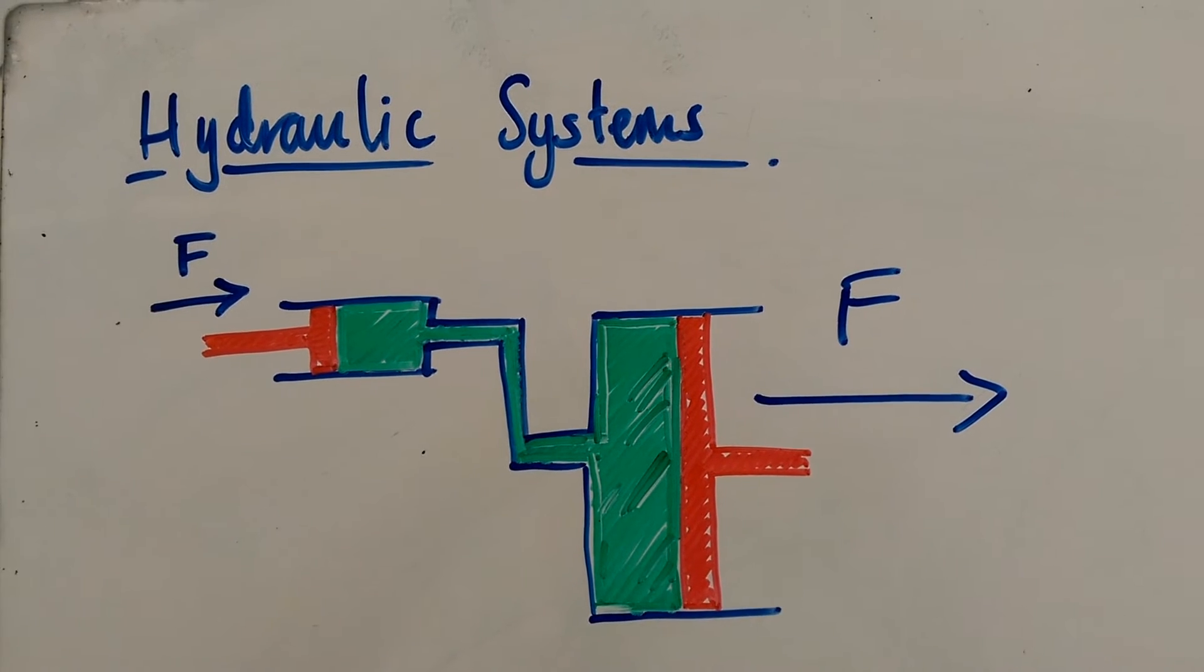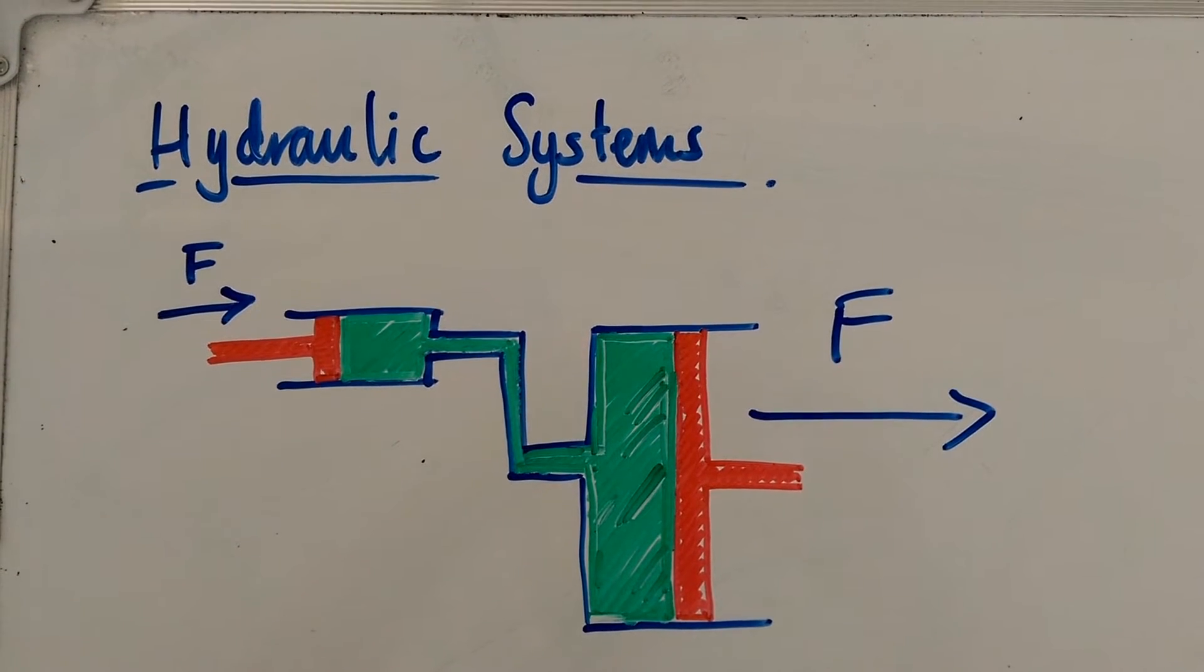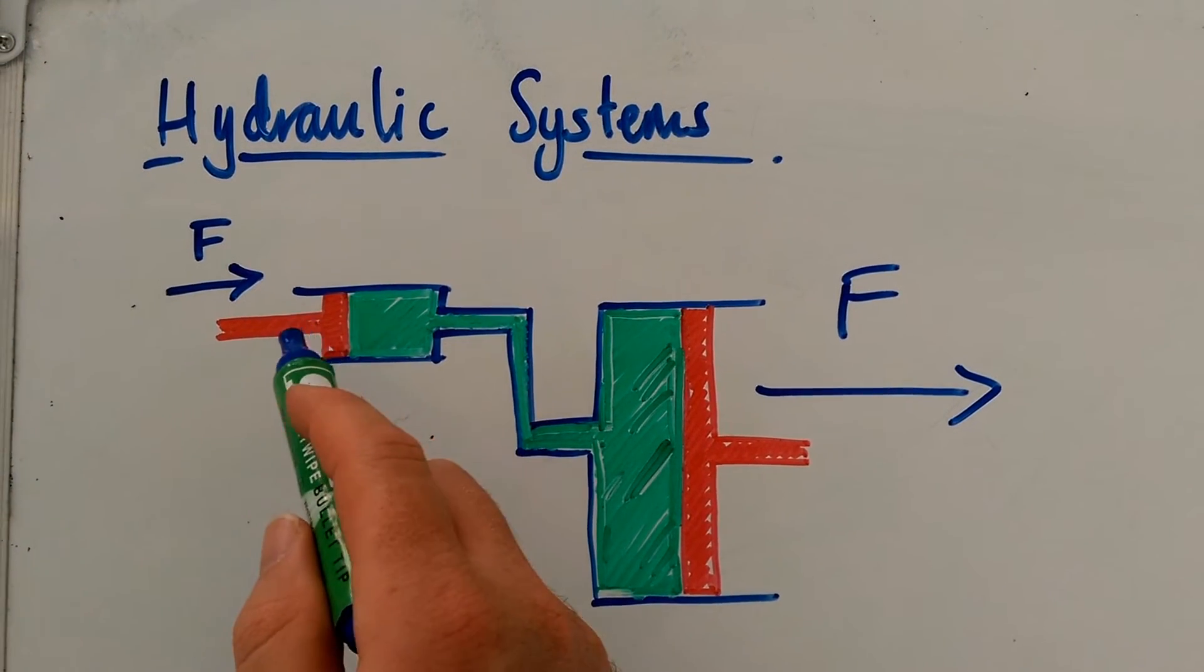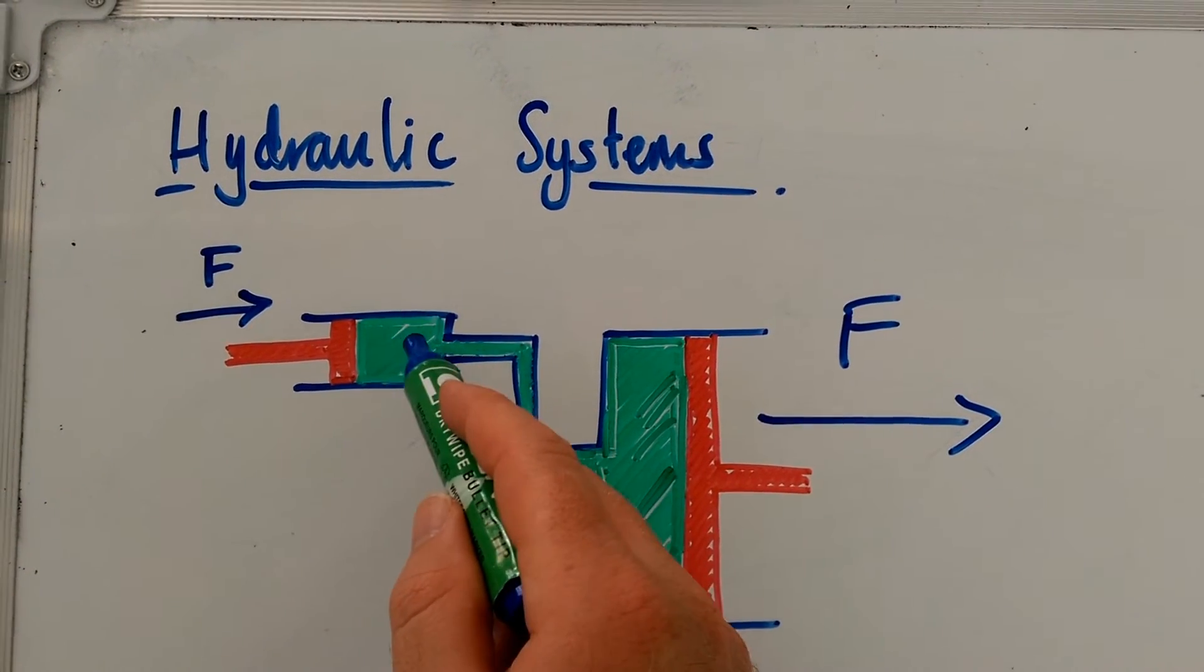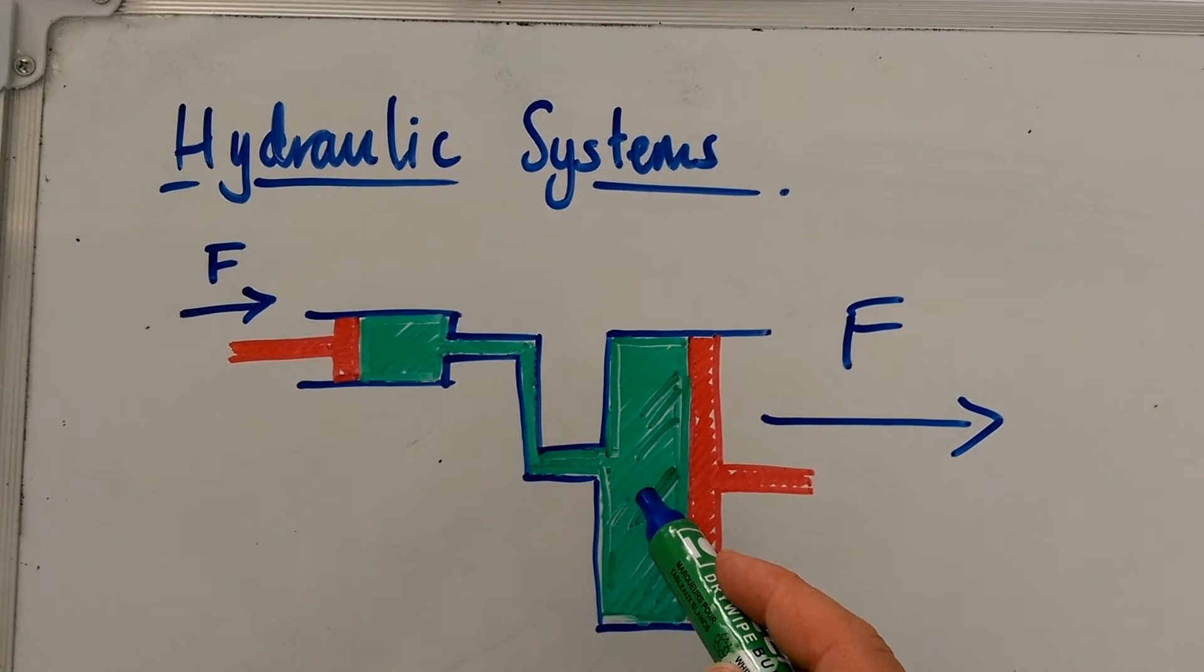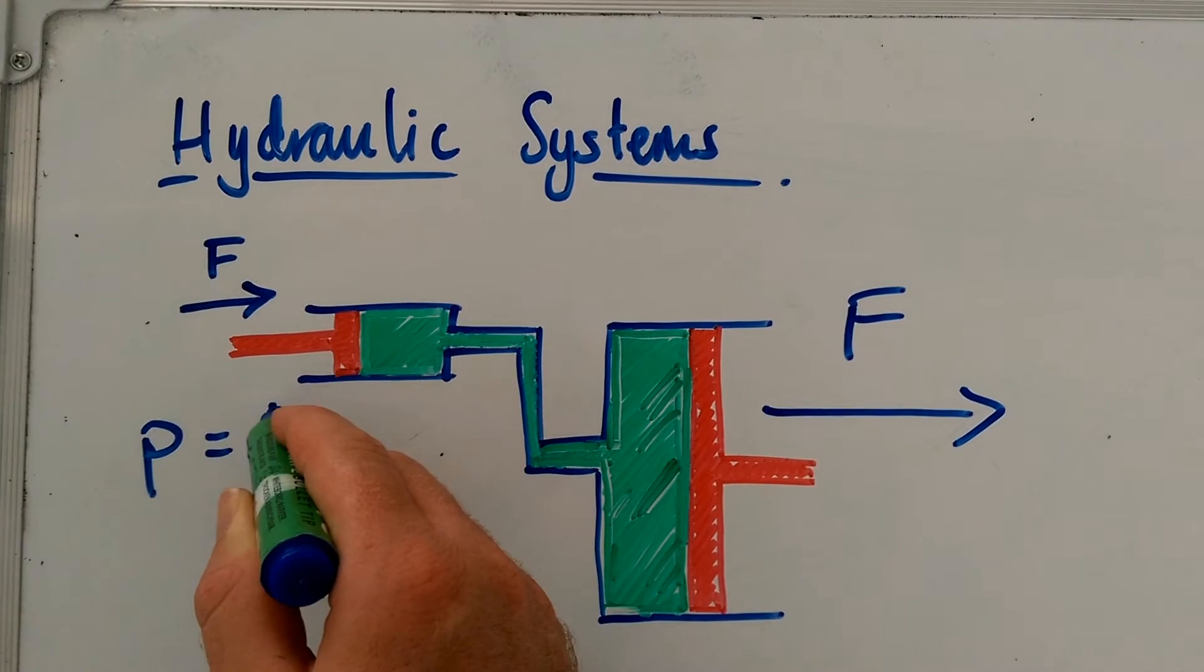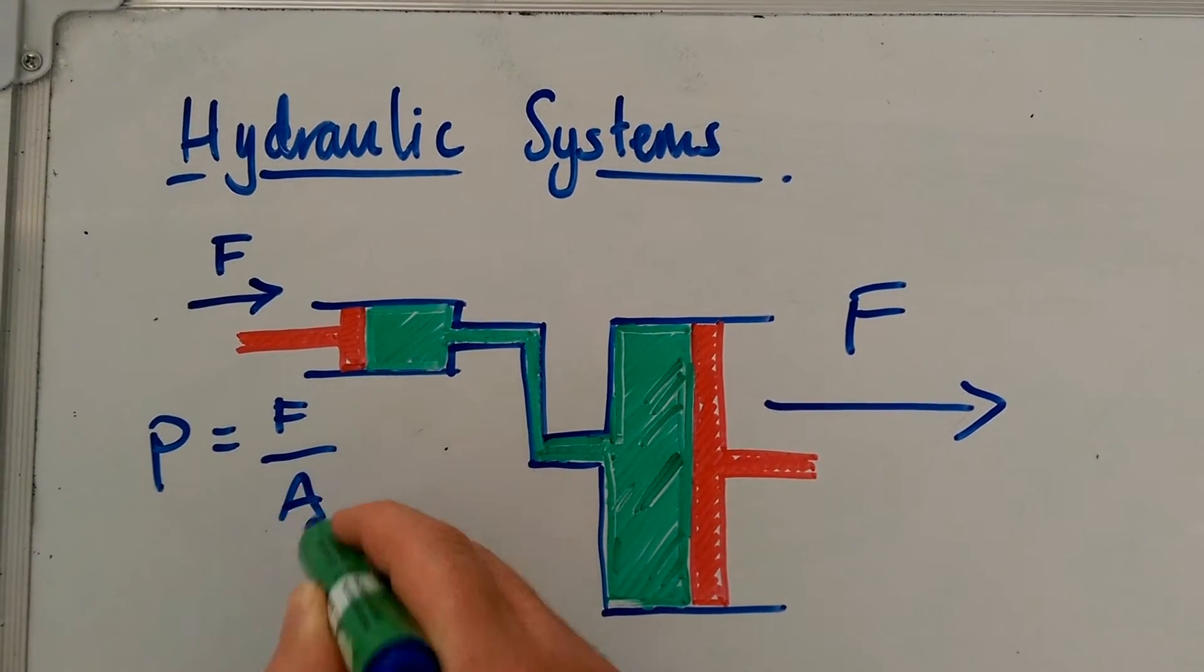We can work by using a principle to do with liquids, which is that liquids are virtually incompressible. That means that any pressure that we put on the liquid here is going to be the same as the pressure we put on the liquid there. And we can calculate that pressure by using the equation force over area,